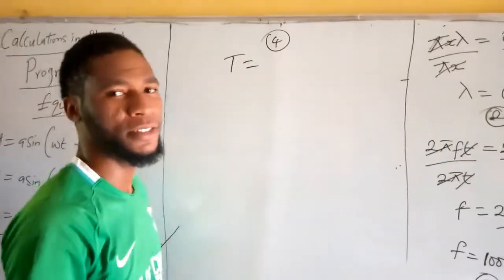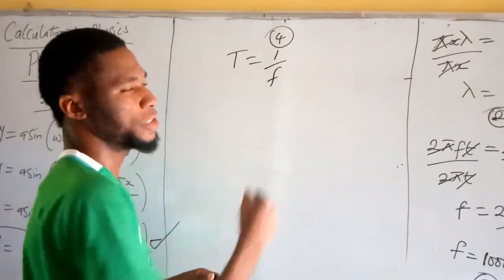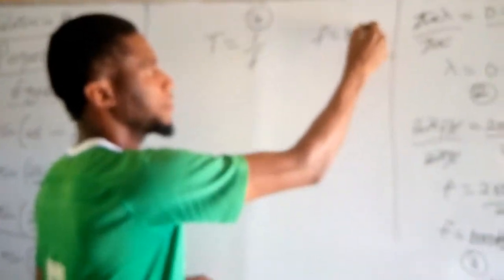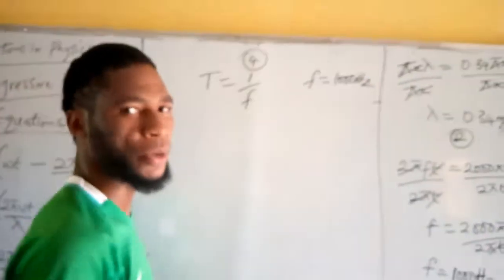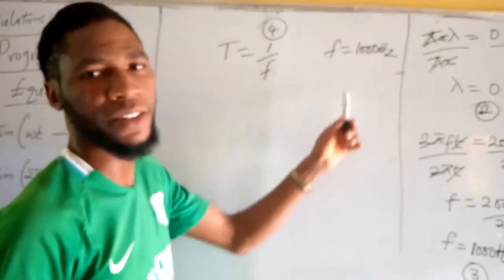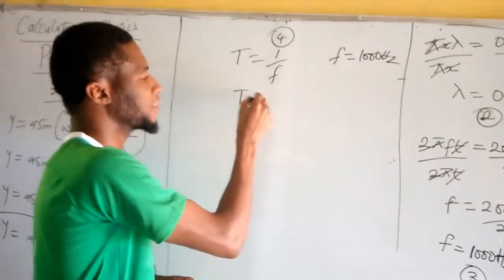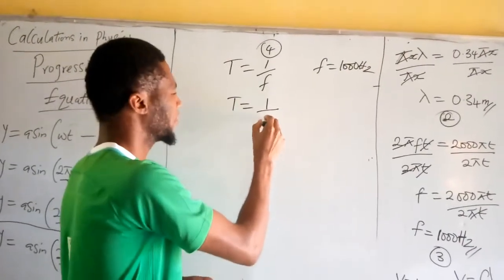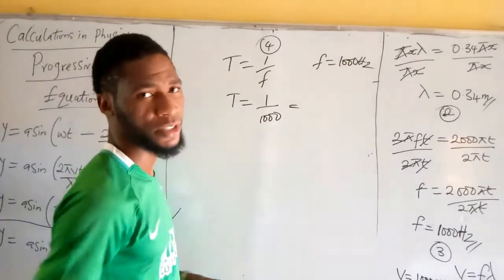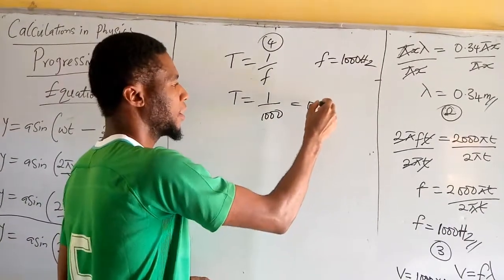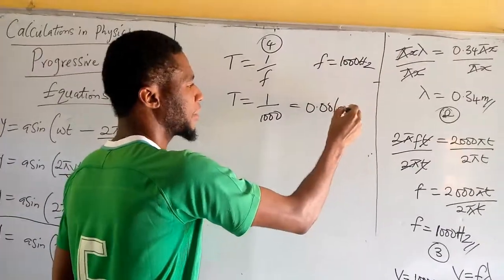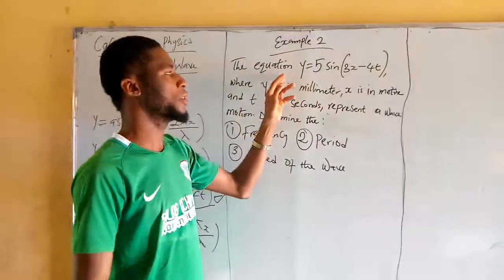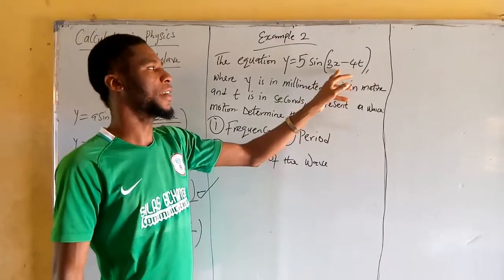Question number 4 says we should calculate the period T. We know that the formula for period is T equals 1 over frequency. Since frequency equals 1000, the period equals 1 divided by 1000, which gives us 0.001 seconds.